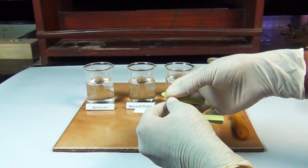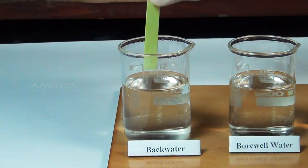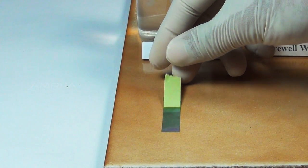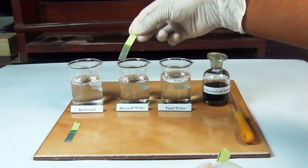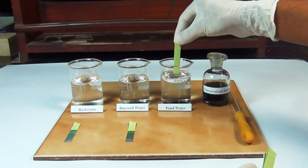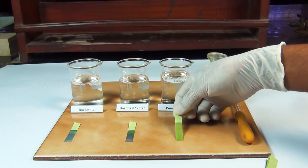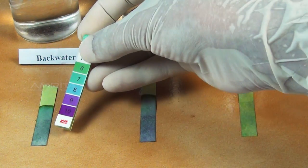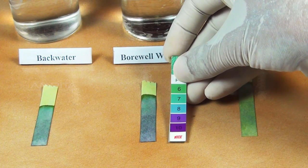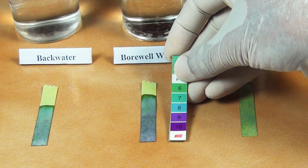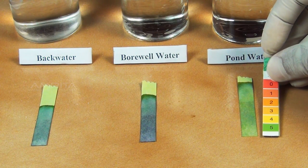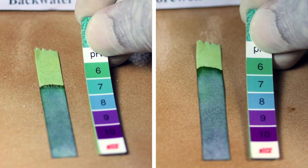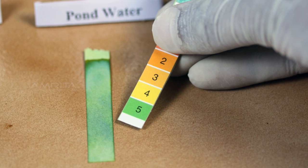Take a pH paper strip and dip into the beaker that contains back water. Keep the wet pH paper strip on the tile. Do the same procedure for borewell water and pond water. Wait for some time to dry the pH paper. Note the color and compare with the color chart given on the broad range indicator paper and get a rough estimate of pH of the sample solution. We can observe that back water and borewell water has pH 8 and pond water has pH 5.